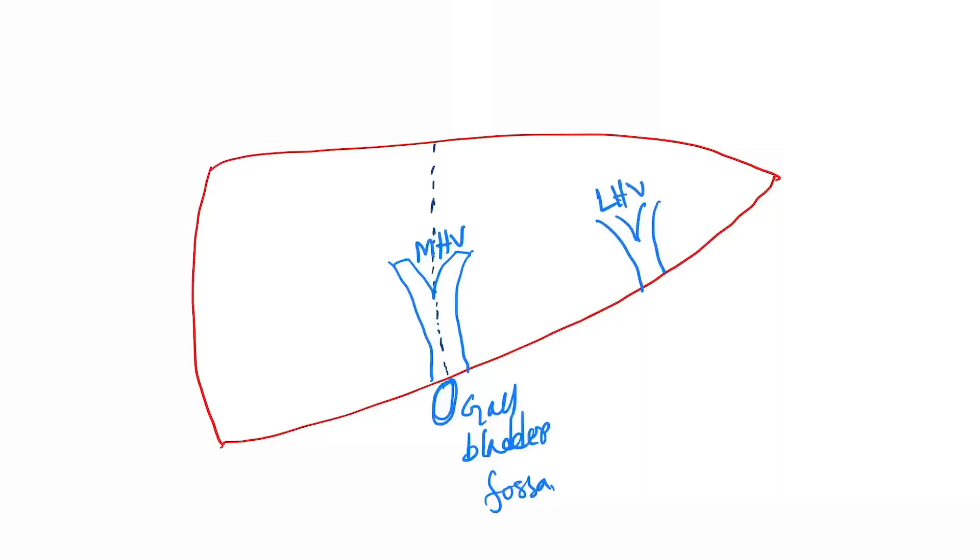Another branch will be the left hepatic vein. And on this side will be the right hepatic vein. Now let's make eight segments. This is number two, this is three, this is four A, this is four B, and then this is five, six, seven, and this is eight.